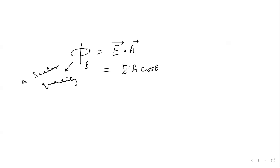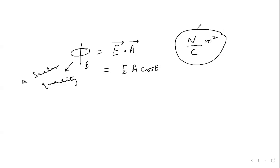If θ = 0°, meaning the area vector is in the same direction as E, cos 0 = 1, so electric flux = EA. If θ = 180°, cos θ = −1, then flux = −EA. If θ = 90°, meaning the area vector is perpendicular to E, cos 90° = 0, so flux = 0. This is how we define electric flux, assuming E is constant over area A. Its SI unit is Newton per coulomb times meter squared (N·m²/C).